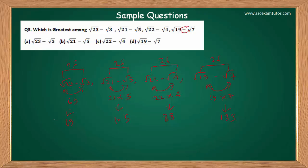In the case where minus is involved, do the opposite. What we were doing when plus was involved was considering the greatest product's root as the greatest. But in this case, the root of the smallest product will be the greatest. And since the largest product corresponds to the largest number, its root will be the smallest — just the opposite of what we do in case of addition.